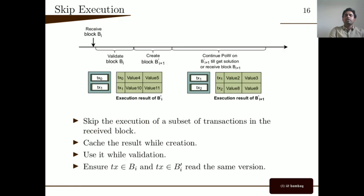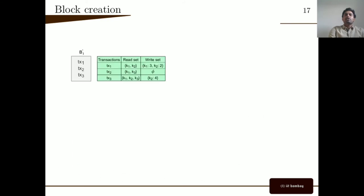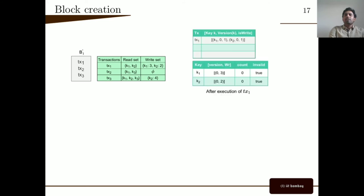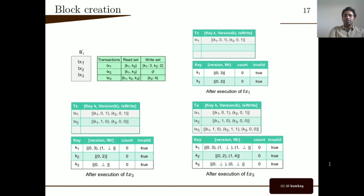As a second contribution, we designed Renoyer, where execution results of the block creation phase are maintained in a table and used to skip the execution of transactions while validating the received block. Renoyer does this by ensuring transactions read the same version of state variables in both the received block and the potential block. Renoyer maintains two tables for this purpose: a key table and a TX table. For example, let's say the potential block contains transactions TX1, TX2, and TX3. After execution of each transaction, an entry is made to both tables recording the version of each key read by that transaction.